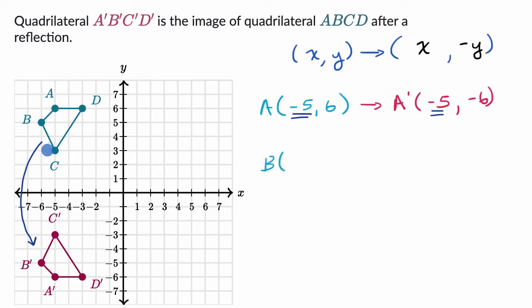For example, we could look at point B in the pre-image is at negative six comma five. And if this rule holds up, when we do this reflection,